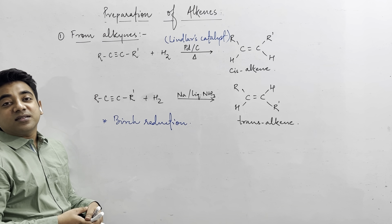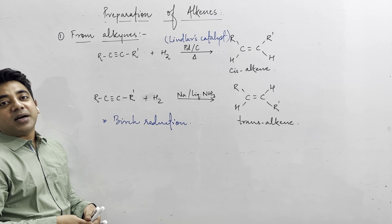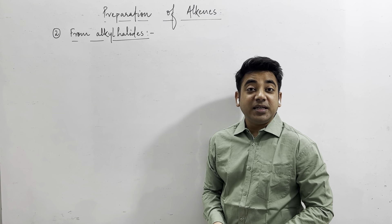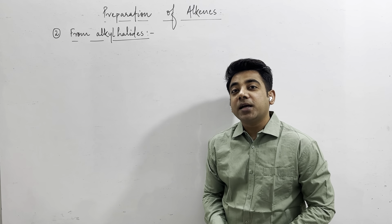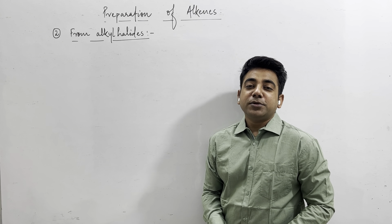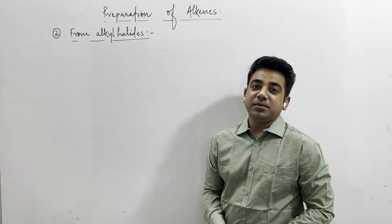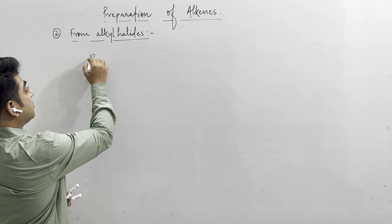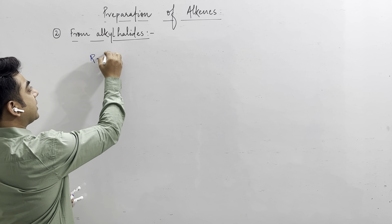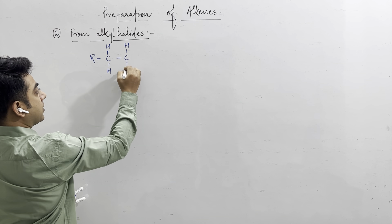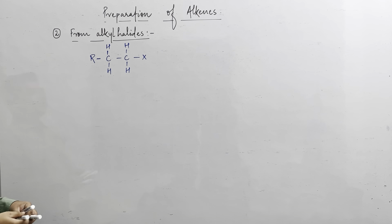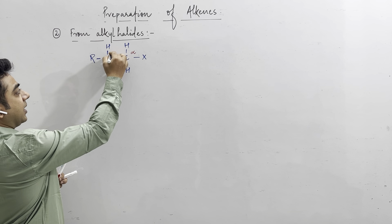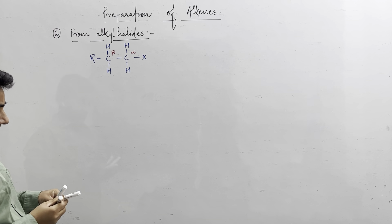The next method of preparation of alkenes is from alkyl halides by elimination reaction, also known as dehydrohalogenation, or alpha-beta elimination or beta elimination. To understand the general reaction, consider an alkyl halide written as RCH₂CH₂X. The carbon to which the halogen is bonded is the alpha carbon, and the carbon adjacent to the alpha carbon is the beta carbon.